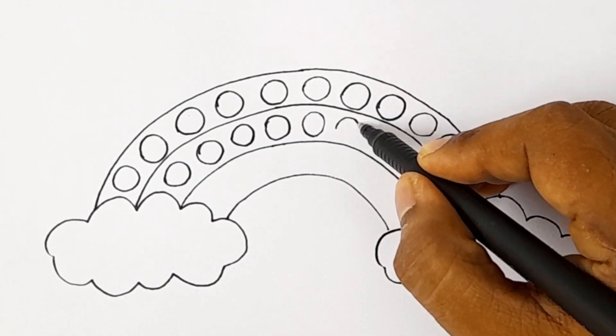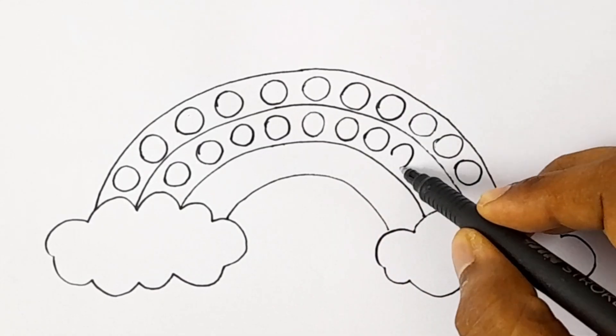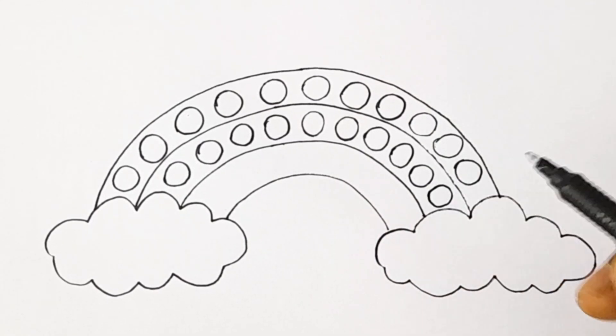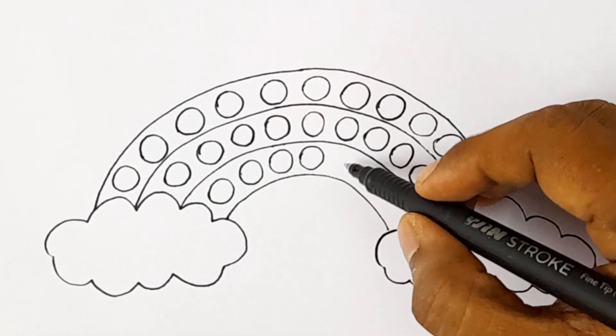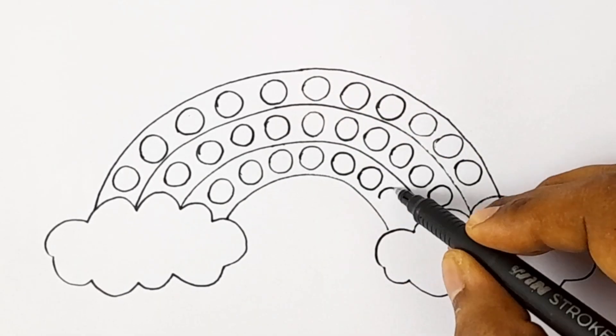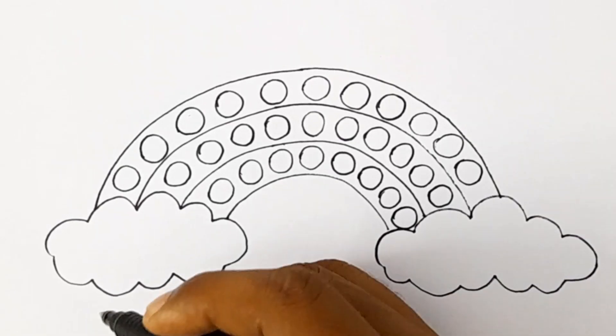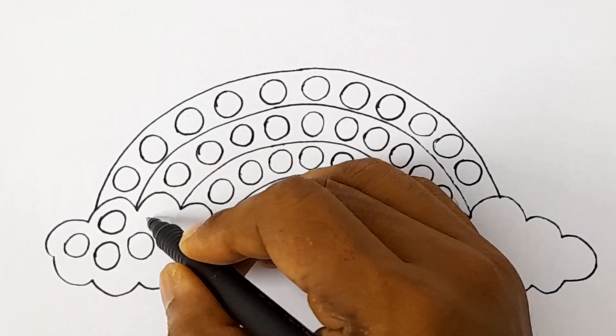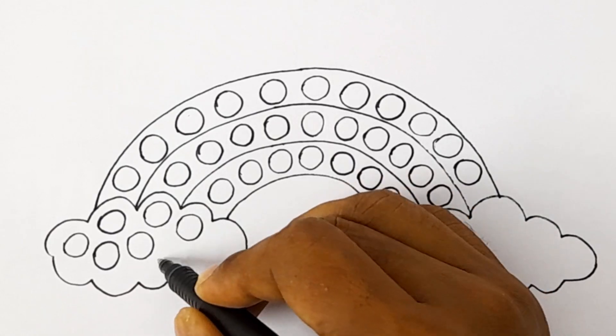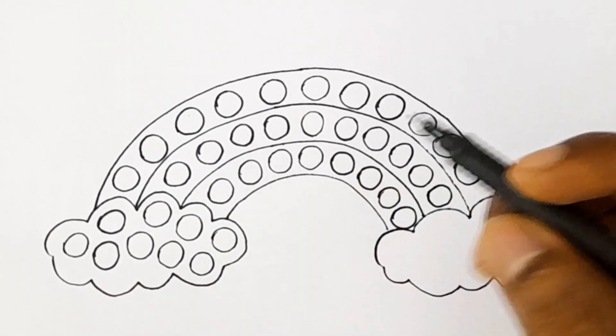Drawing and painting slowly, otherwise your drawing will be wrong. Yes, look how beautiful this rainbow is. The little circles are here.